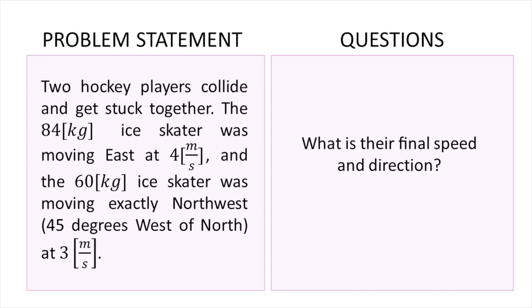Feel free to copy the problem on your notebook so that you can follow along. The problem statement goes as follows: we have two hockey players and they collide and get stuck together. The 84-kilogram ice skater was moving east at 4 meters per second, and the 60-kilogram ice skater was moving exactly northwest — 45 degrees west of north — at 3 meters per second. The question we have to answer is: what is their final speed and direction?